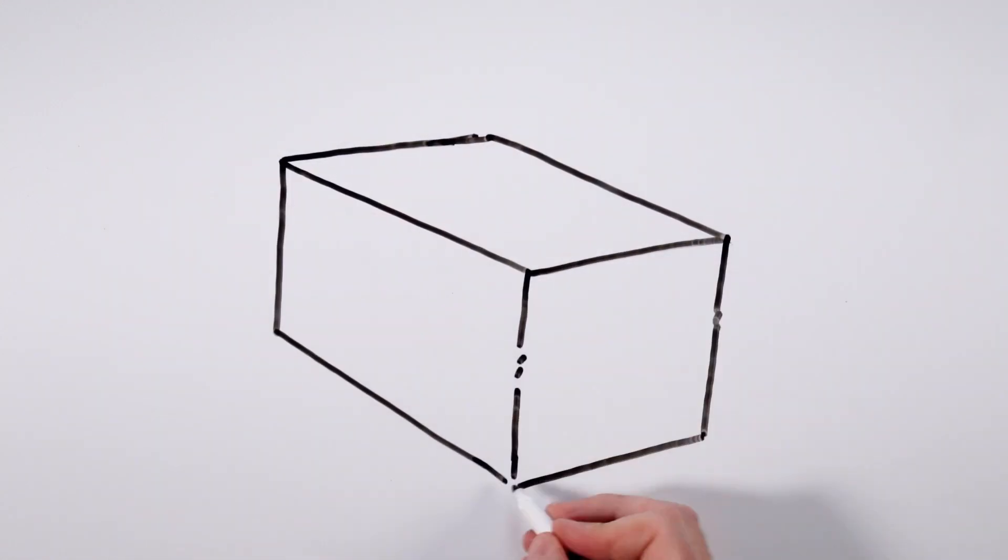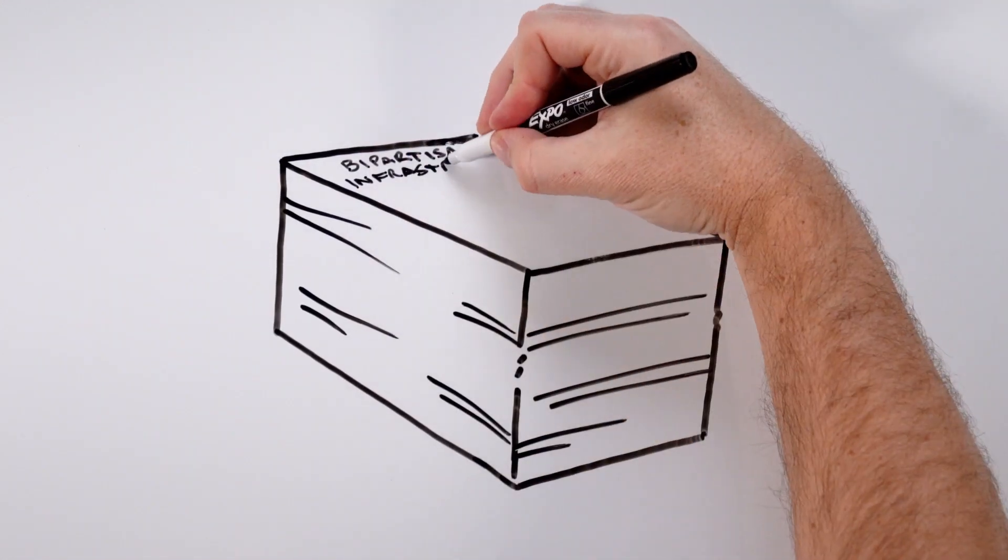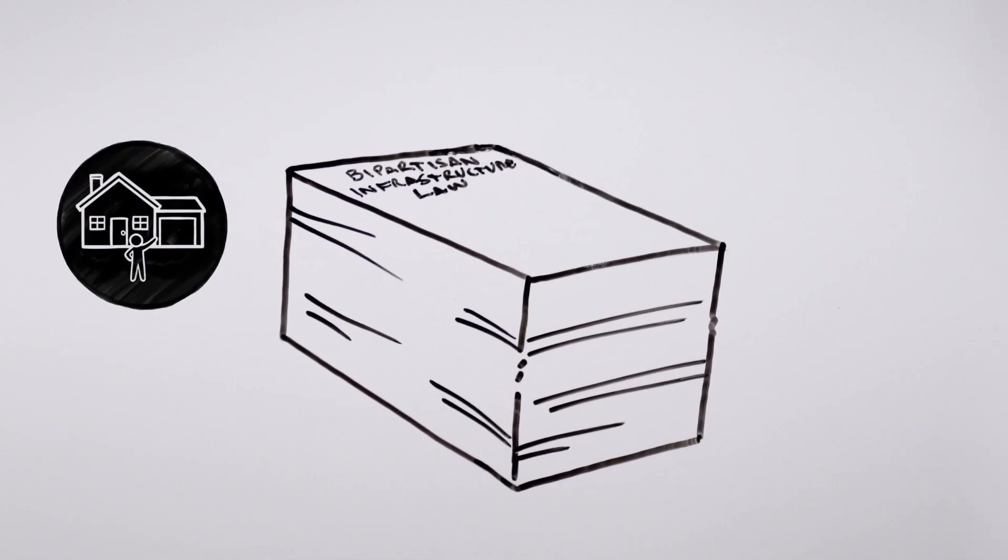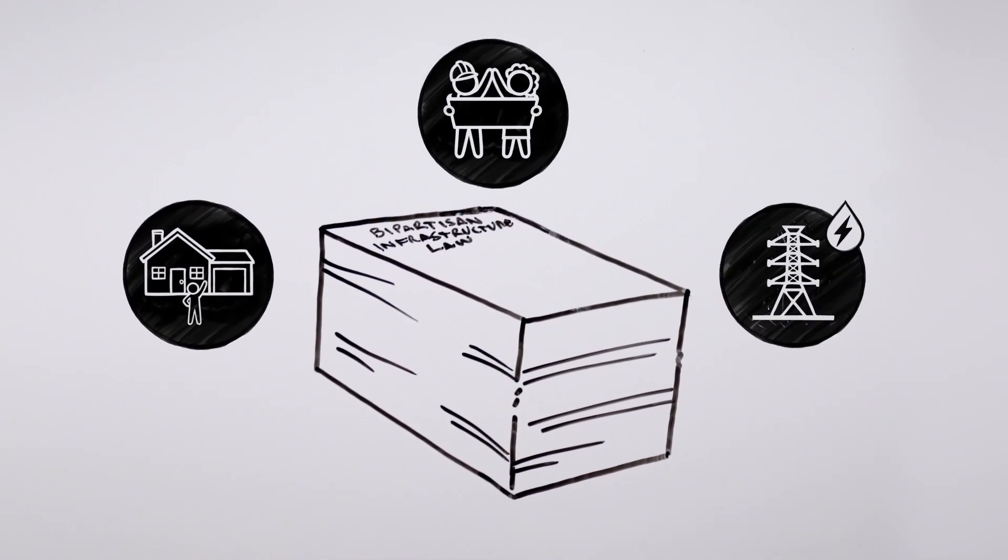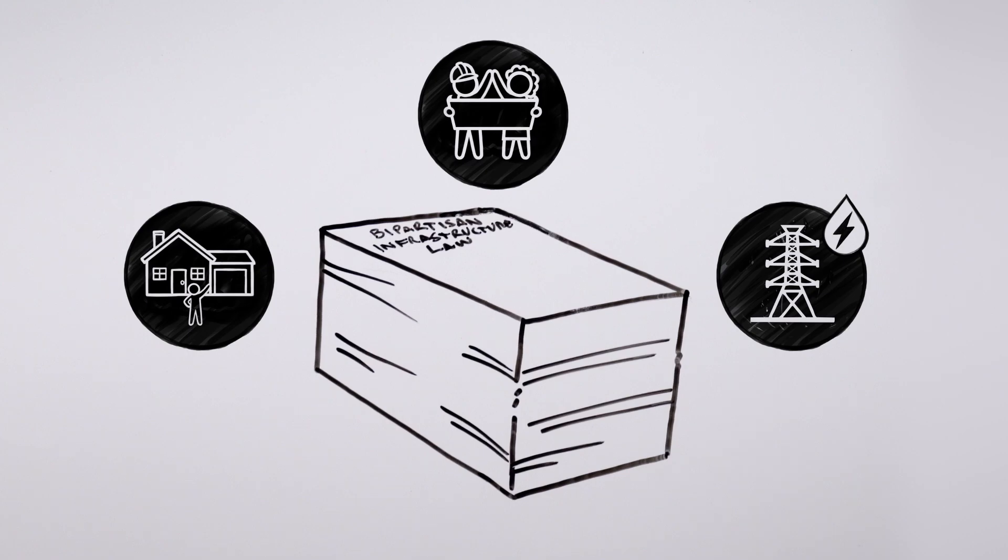You've probably heard of the Bipartisan Infrastructure Law, or BILD, a once-in-a-generation opportunity to build more resilient communities, good jobs, and a reliable power grid. But what can BILD do for hydropower?